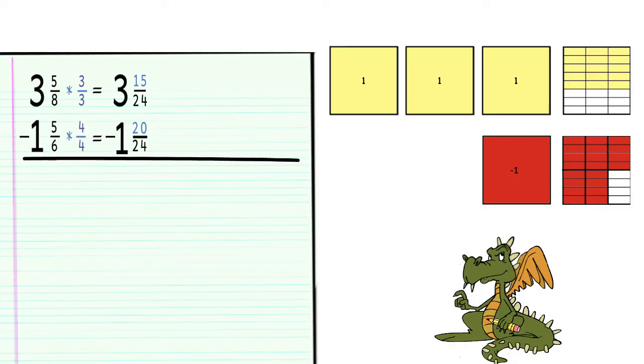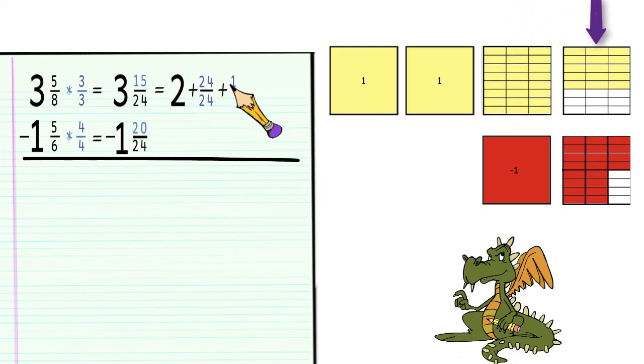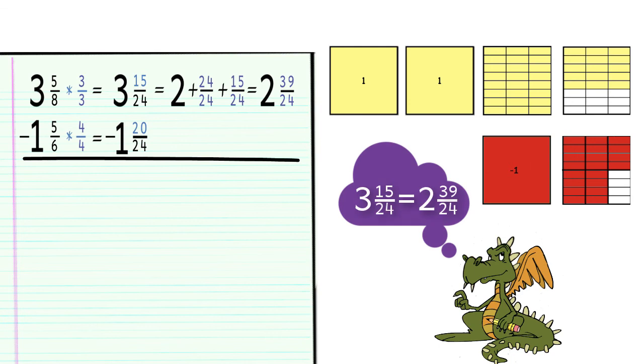Well, we're going to rewrite 3 as 2 plus 1, and then we're going to write that 1 as 24 twenty-fourths. Of course, then we'll add the 15 twenty-fourths that we had before, and that would give us 2 and 39 twenty-fourths. This process is called regrouping, since 3 and 15 twenty-fourths is equivalent to 2 and 39 twenty-fourths.